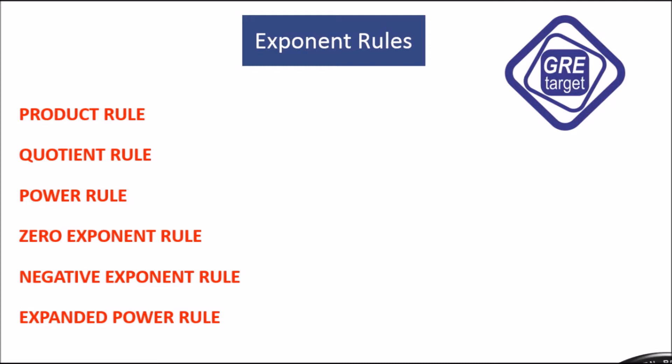First, the product rule: x raised to m multiplied by x raised to n equals x raised to m plus n. We add the exponents to get the result x raised to m plus n.